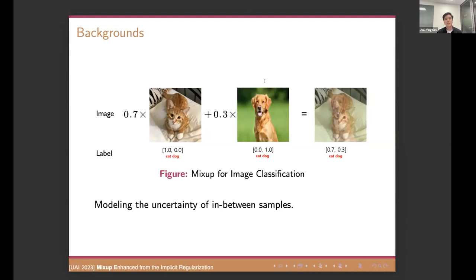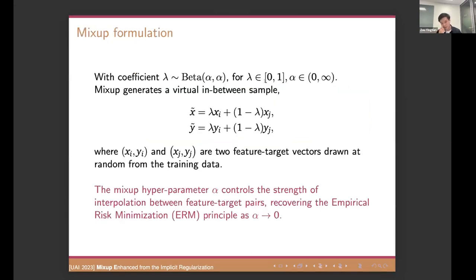So let's introduce the background first. Mixup is a simple but powerful data augmentation technology that gains huge success in many fields. Take the image classification for example. If we mix the two images from cat and dog with coefficients 0.7 and 0.3 respectively, we can get a synthesized image that is 70 percentage probability of being classified as a cat, and a 30 percentage could be a dog, right? As we can see, Mixup modeling the uncertainty, from the black and white mode to the uncertainty aware.